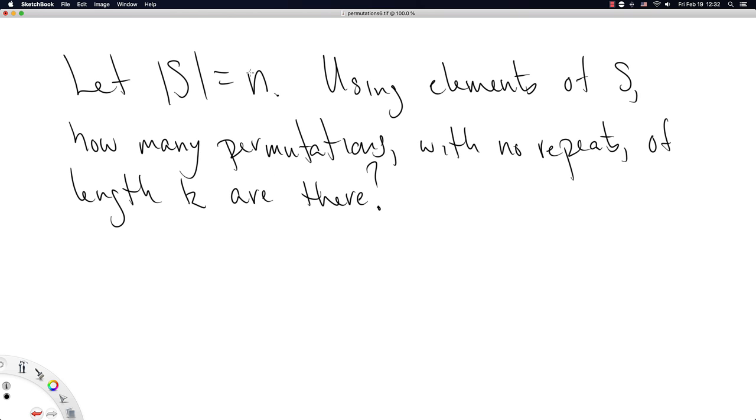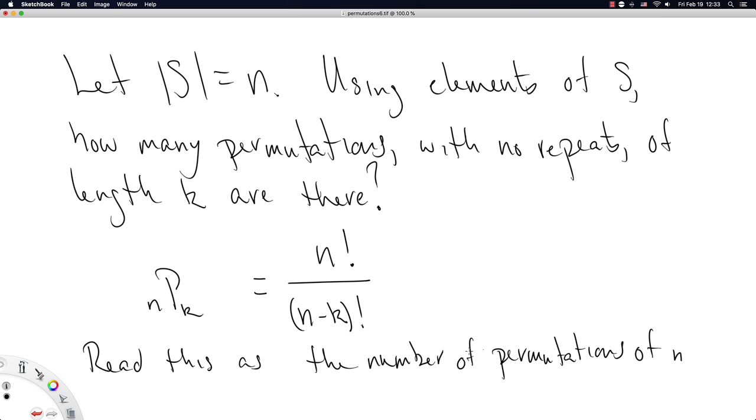This is why I'm saying it's a generalization because I'm not telling you what the number N is and I'm not telling you what the number k is. We write this out as n factorial divided by n minus k factorial. Some people write this out as little n capital P little k.